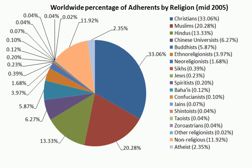The Gupta period marked a watershed of Indian culture. The Guptas performed Vedic sacrifices to legitimize their rule, but they also patronized Buddhism, which continued to provide an alternative to Brahmanical orthodoxy. Buddhism continued to have a significant presence in some regions of India until the 12th century. There were several Buddhistic kings who worshipped Vishnu, such as the Gupta Empire, Pala Empire, Mala Empire, Somavanchi, and Satavahana.